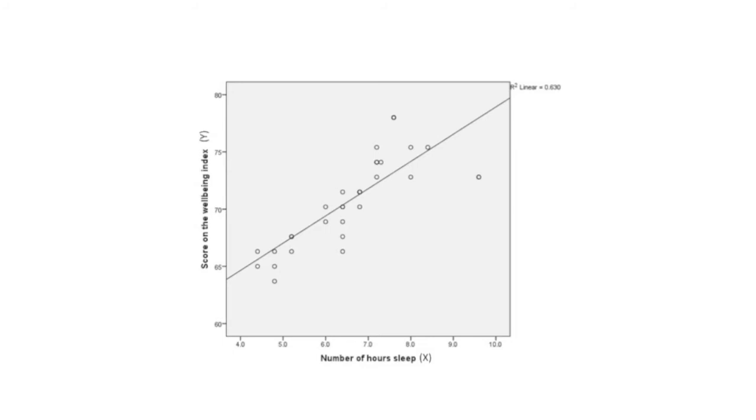This line allows the best possible prediction of y scores, or in other words y hat, from the knowledge of the x scores. In other words, it's the best possible prediction of wellbeing from the knowledge of how much you slept the previous night.